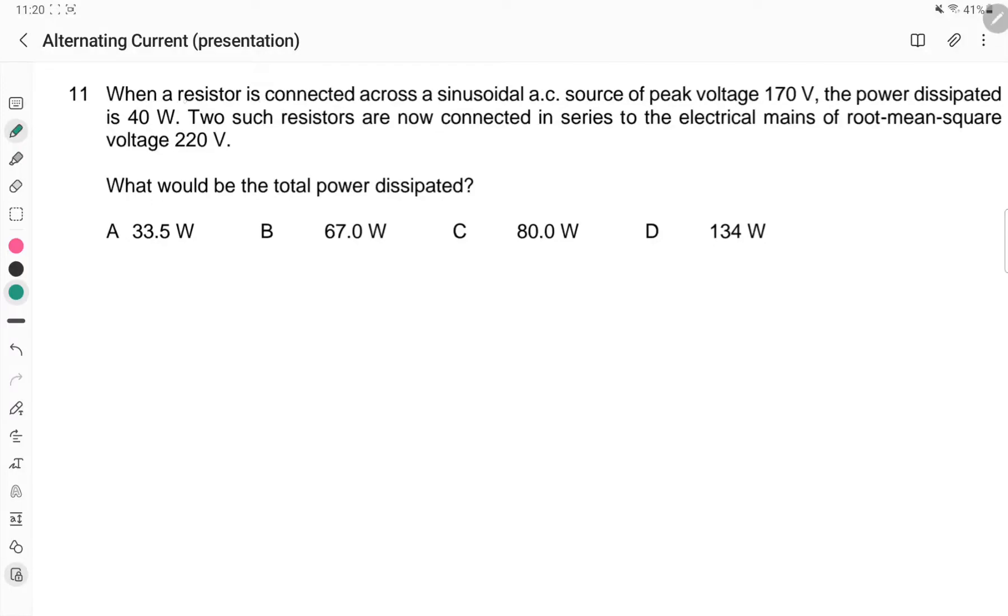In this question, we have a resistor connected to an AC source of peak voltage 170V, and we know the power. So let's write something out for this first AC: P equals V_RMS squared upon R.